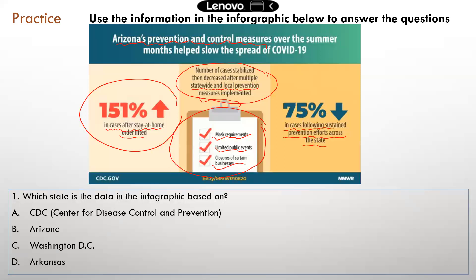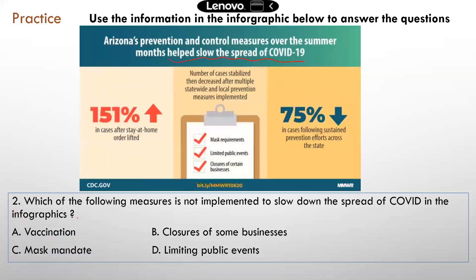Now that you've understood everything, it should be pretty easy to answer the questions. Question one: which state is the data in the infographic based on? That's Arizona. For question two, pause the video now, answer it, and then come back.